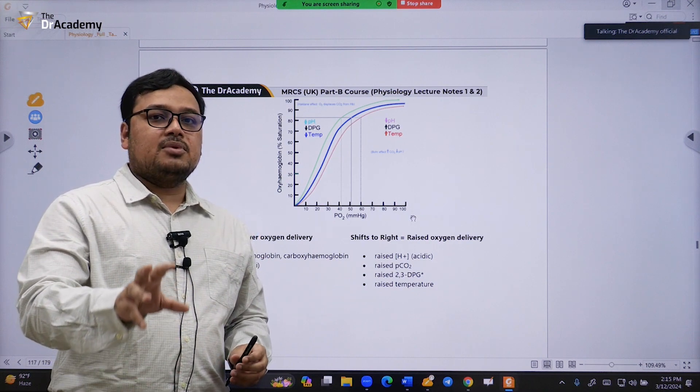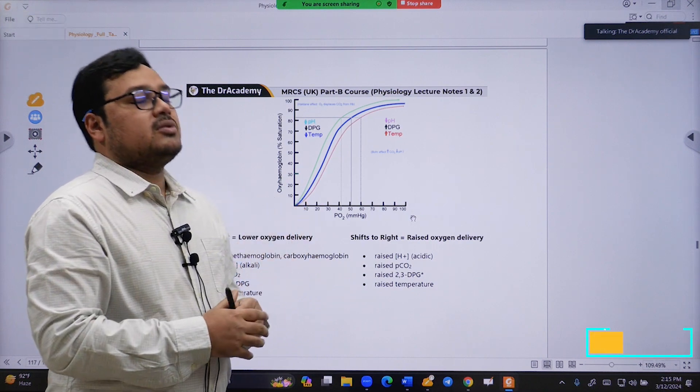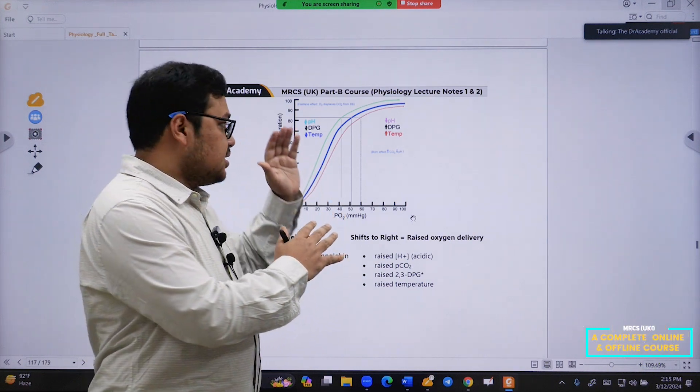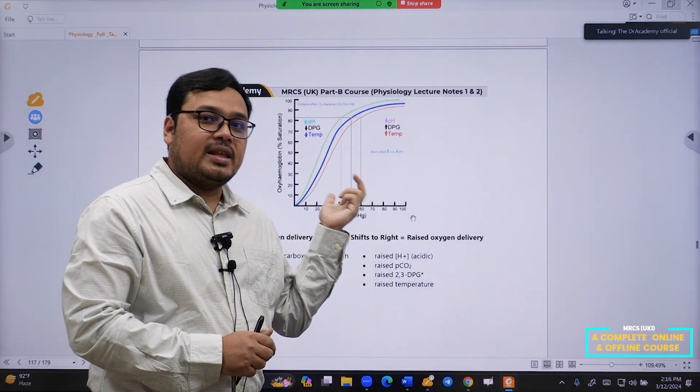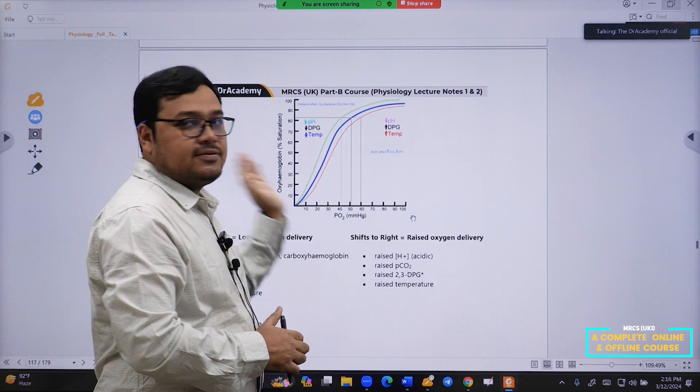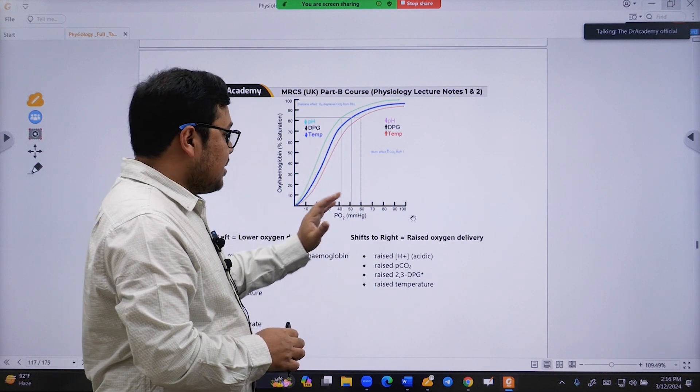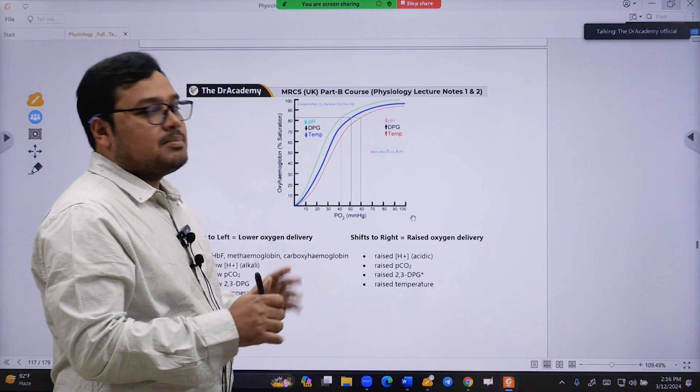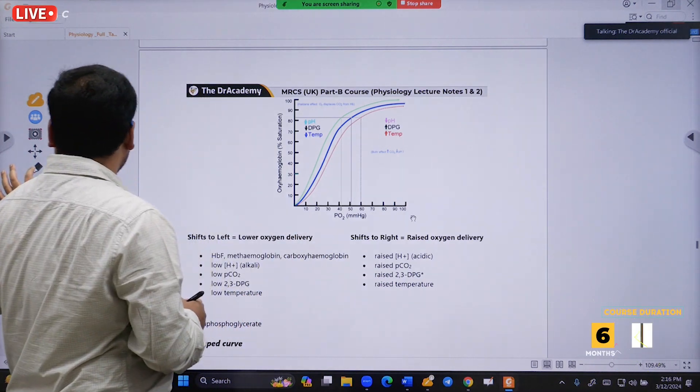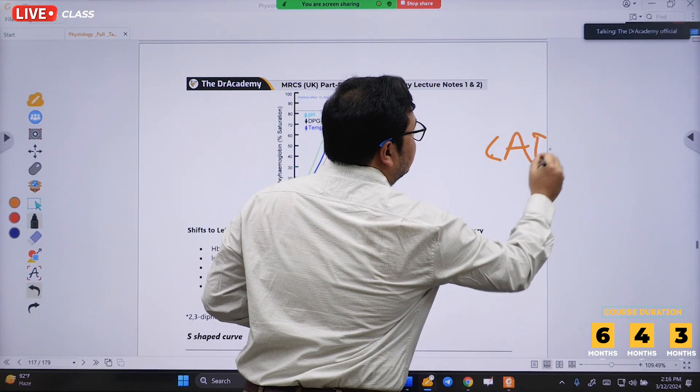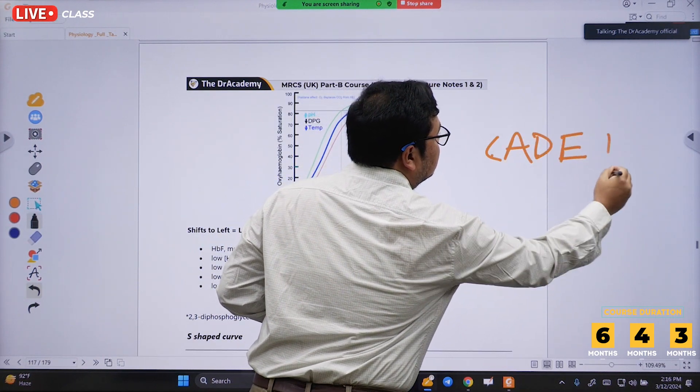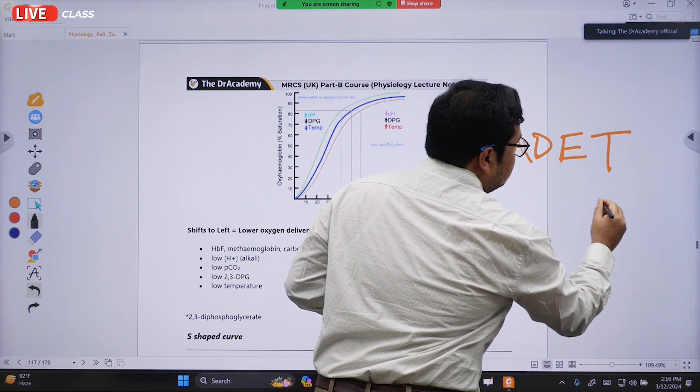This kind of basic thing is not so important for MRCS Part B. We have to know when that curve shifts to the right and what is the reason the curve shifts to the left. There's a very famous mnemonic - CADET shifts to right.